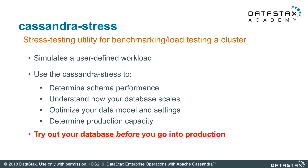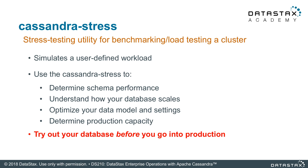Cassandra Stress can be used to do the following things: you can check out your schema performance, figure out how your database will scale, optimize your data model, and figure out your capacity in a production environment. In summary, Cassandra Stress is a tool that will help you try out your database before you switch it all over to production.